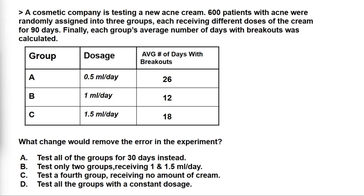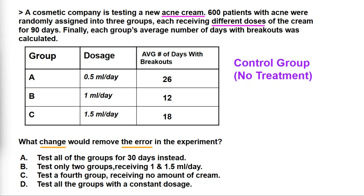In this question, we are asked what change would remove the error in the experiment. A cosmetic company is testing a new acne cream. 600 patients with acne were randomly assigned into three groups, each receiving different doses. In any experiment where you are giving different doses of a medication or drug, you must have a control group. The control group doesn't receive any treatment. So for this experiment, we need a fourth group that receives no treatment, because the only way to check if the cream was effective is by comparing it to the group that didn't receive any treatment. So the answer to this question is C.